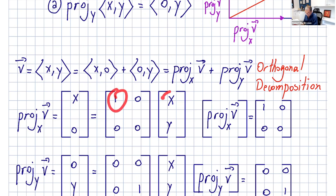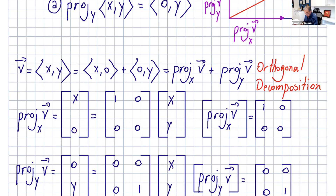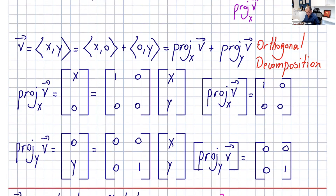Let's try this: 1 times x is x, plus 0 times y is 0, so we get x in the first component. 0 times x plus 0 times y is 0. So the matrix for the projection of v onto the x-axis is given by this matrix. If you have a vector in R2 and multiply it by this matrix, you can change its direction or length. Let's continue with projections and reflections.